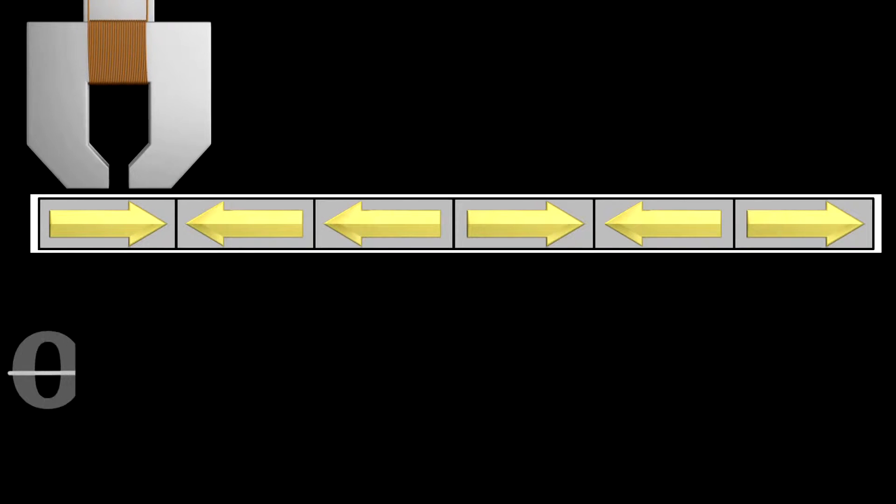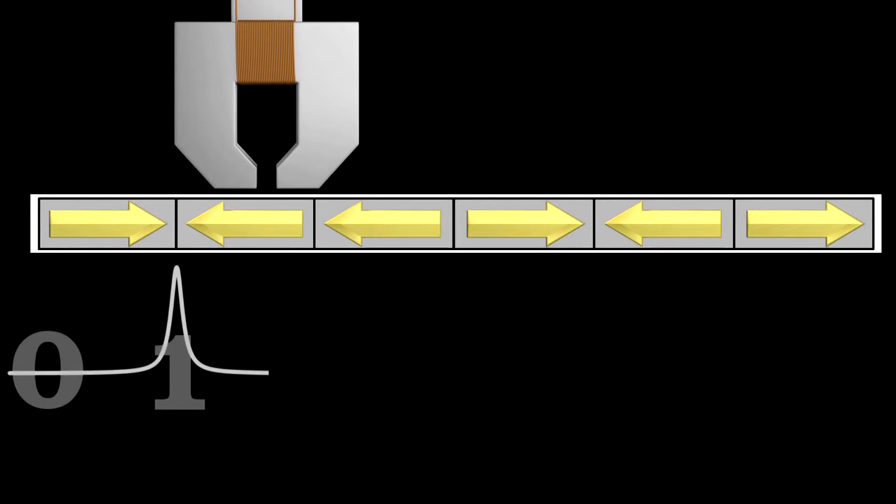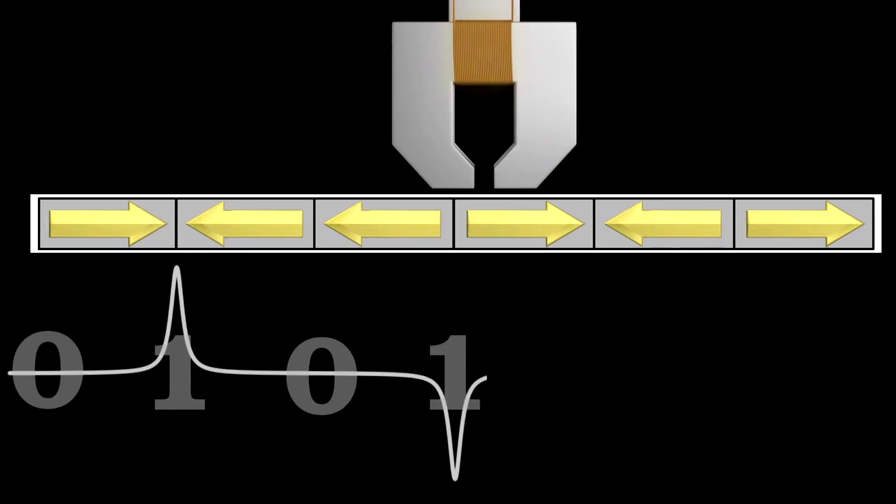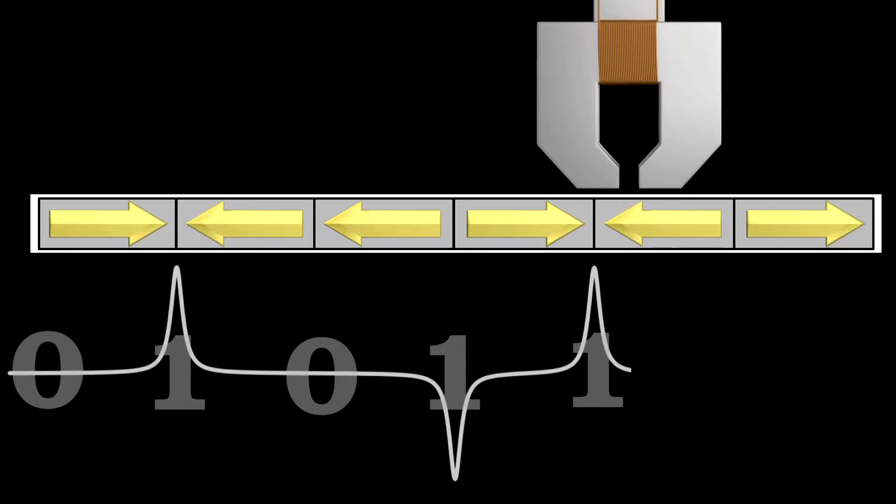So, as the head passes a section where the polarity has changed, it records a voltage spike. The spikes, both negative and positive, represent a one, and where there is no voltage spike, corresponds to a zero.